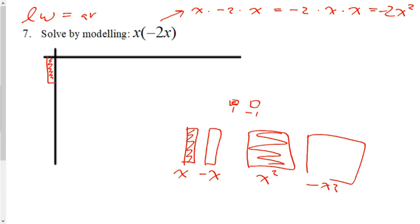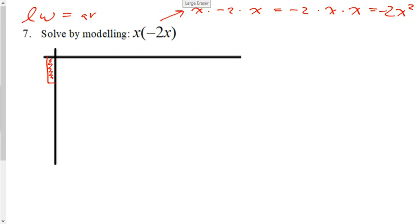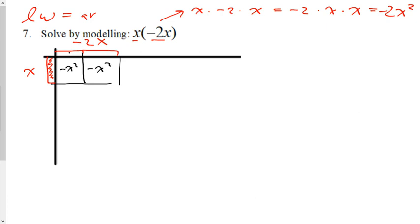X goes as our length, and over here we put our width of negative 2x — the open ones because it's negative 2x. Now we have our length and width, and the area inside will represent the product. Box it up, bring the lines straight down. A negative x times a positive x gives negative x squared for both tiles, and our solution is still negative 2x squared.